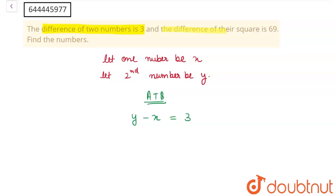And the second equation says the difference of their squares is 69. Therefore, I can write it as y square minus x square is equal to 69. This is my first equation and this is my second equation.